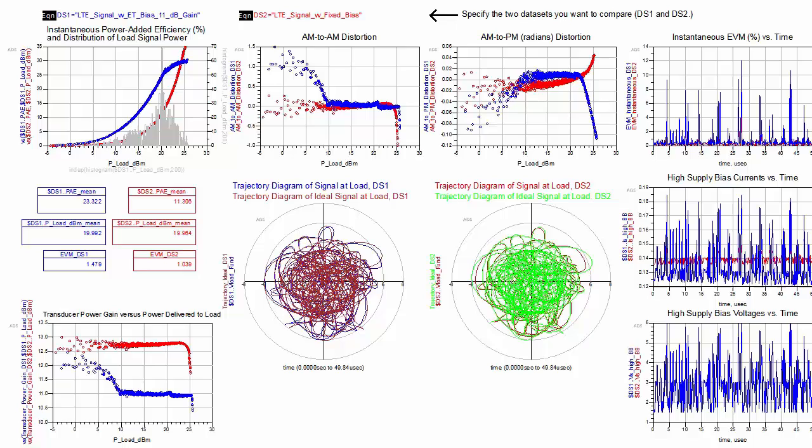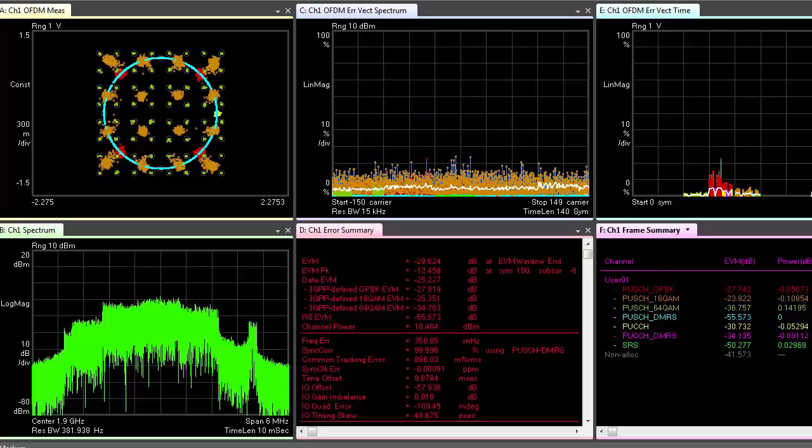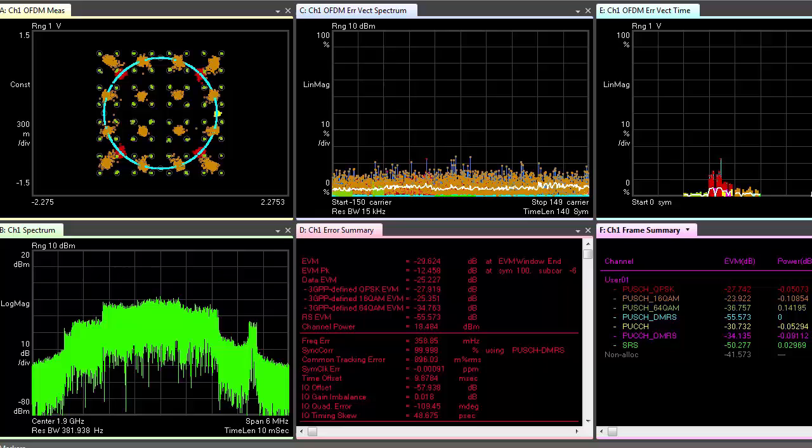Also, you can use the Keysight Vector Signal Analyzer software to look at detailed specifications as shown.